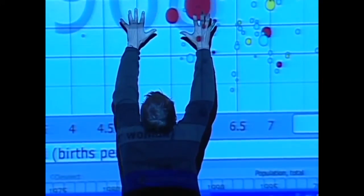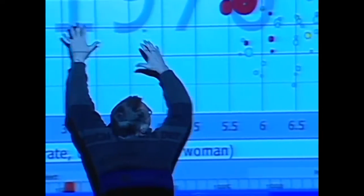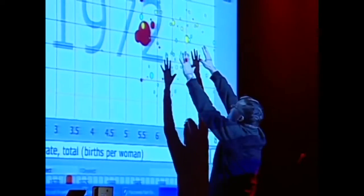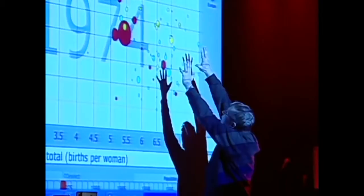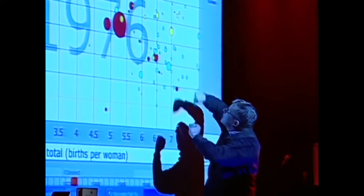All the green Latin American countries, they are moving towards smaller families. The yellow ones here are the Arabic countries, and they get larger families, but longer life, not larger families.